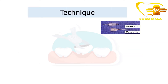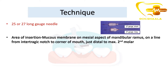The technique involves usage of a 25 or 27 long gauge needle. The area of insertion is on the mucous membrane on the mesial aspect of the mandibular ramus, on a line from the intertragic notch to the corner of the mouth, just distal to the maxillary second molar.